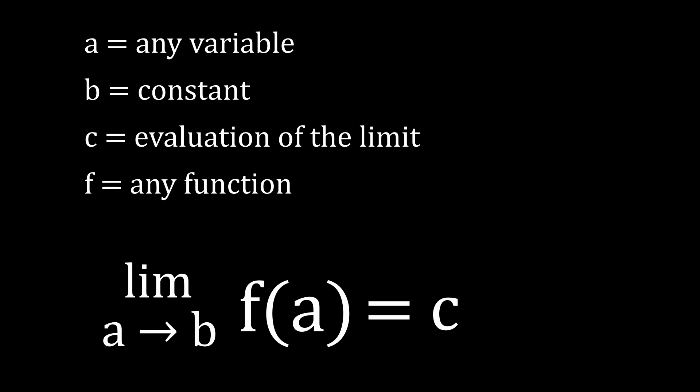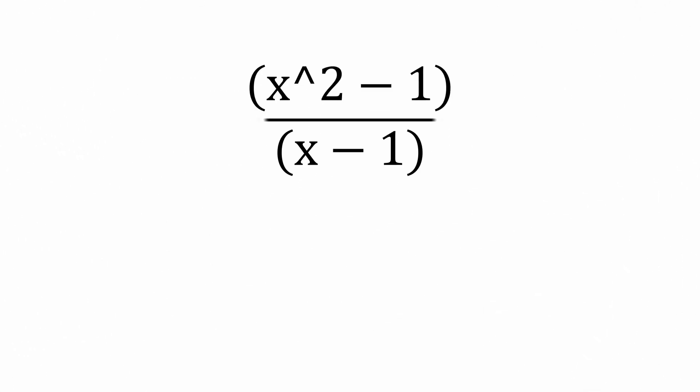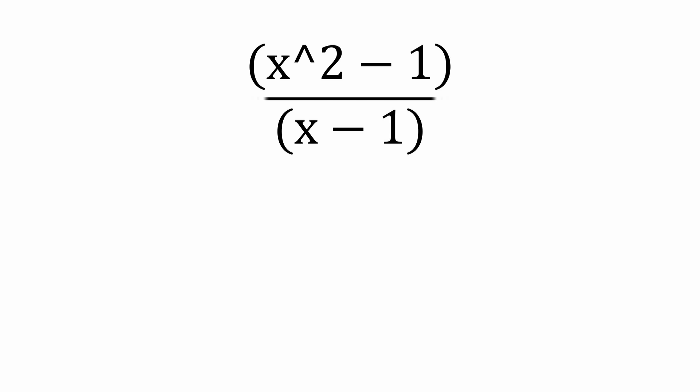Armed with this understanding of limits, we can go back and confidently notate that problem. The limit of x squared minus 1 divided by x minus 1, as x approaches 1, is 2.